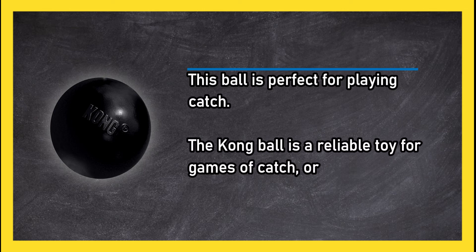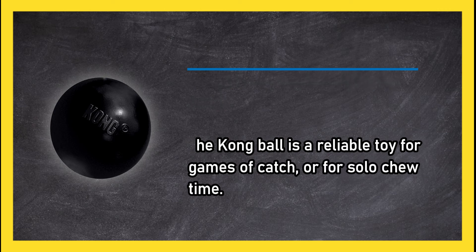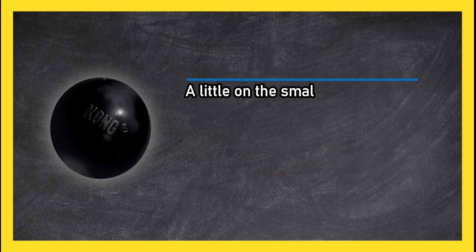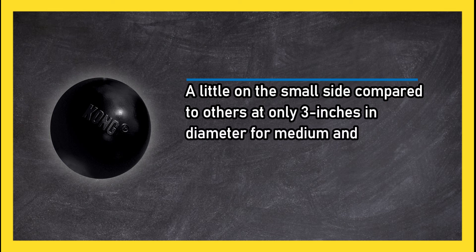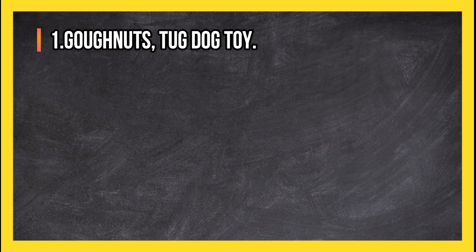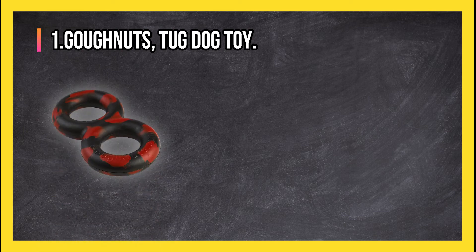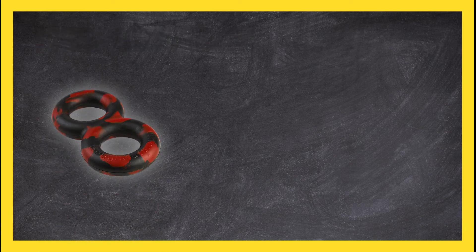A little on the small side compared to others at only three inches in diameter for medium and large dogs. At number one, Golf Nuts Tug Dog Toy. A good toy for large breeds, it is really big at 11 inches long and 6 inches wide.